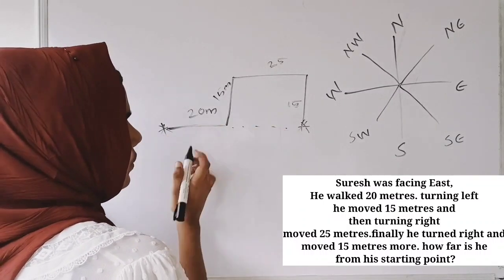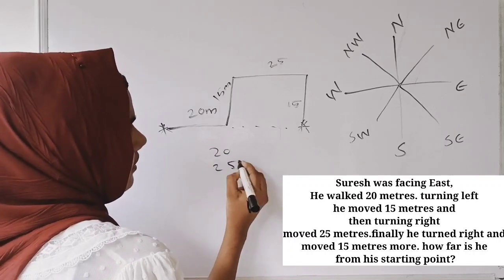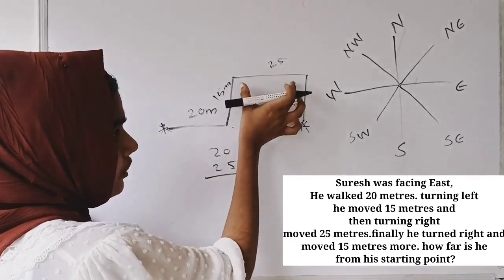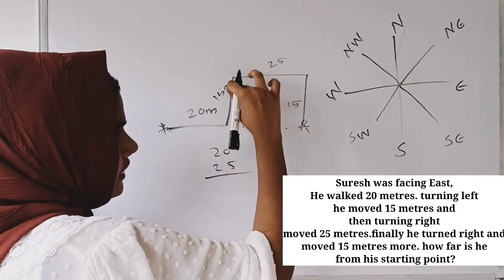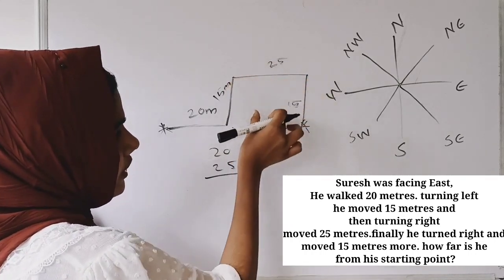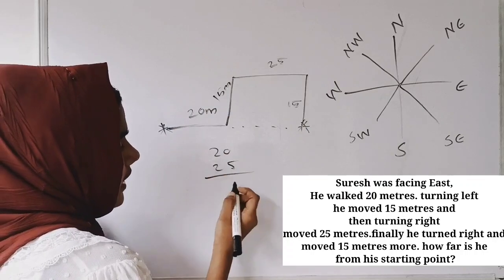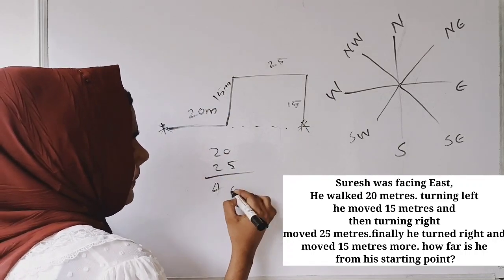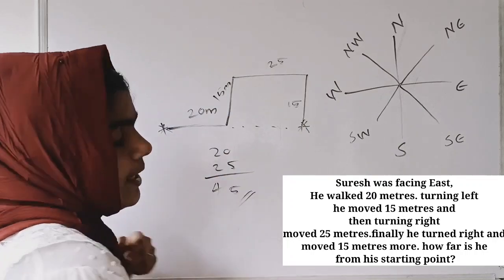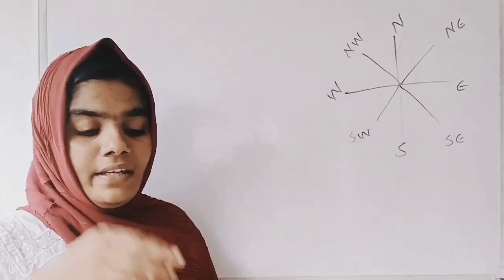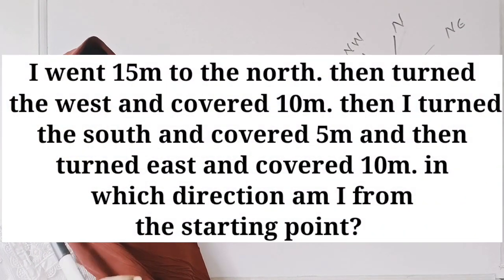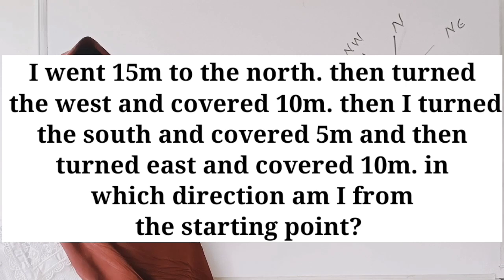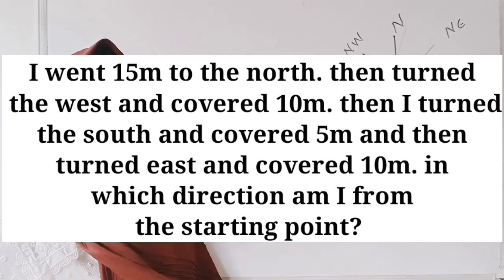The extra distance is 20 plus 25. Then turning South it covered 5 meters, then turning East it covered 10 meters. In which direction am I from the starting point?